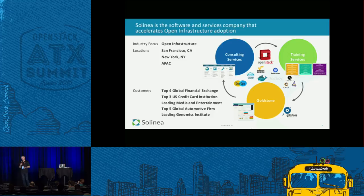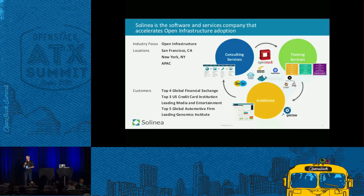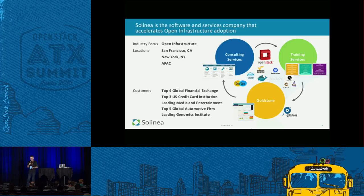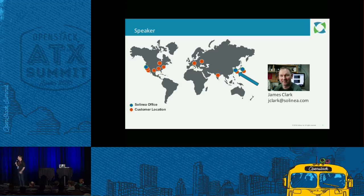We offer training services to our customers, covering OpenStack operations, architecture, and also open source software such as Docker and other components essential to the cloud ecosystem. And lastly, we have Goldstone, a product that has come from our experiences in actually deploying OpenStack for customers. It's a platform to help customers operate OpenStack — metrics, compliance, et cetera. My name is James Clark, and I work in the Seoul office. Solenia is headquartered in San Francisco, with two Asia-Pacific offices in Tokyo and Seoul. My customer area is mainly Asia and Europe.